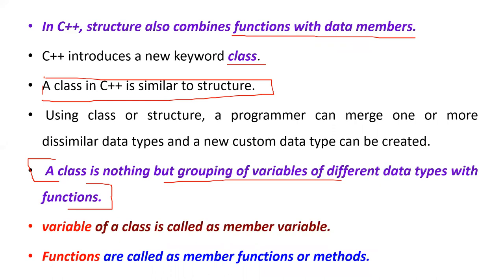The variables of a class are called member variables, and the functions are called member functions or methods. These two are the important terminologies that you will come across in C++.